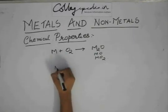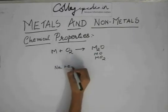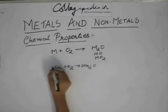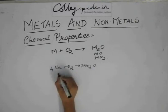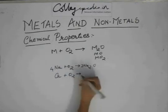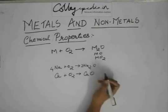So you can have sodium plus O2 giving Na2O. You can have calcium plus oxygen giving CaO.